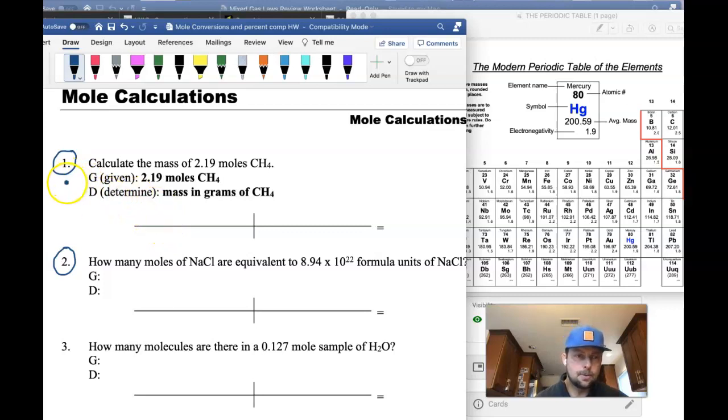So in each of these problems, I put a G here for the given, and this is where we read the given quantity in each problem and then where we're trying to go or what we're trying to determine. So anytime you figure out the given, whatever that measured value is, you're going to write it up here on these train track looking things.